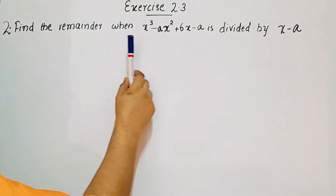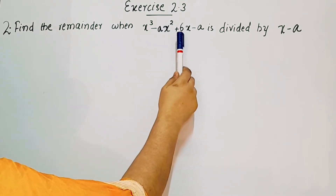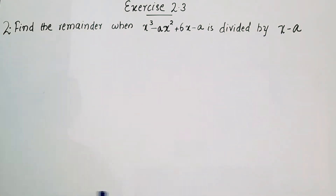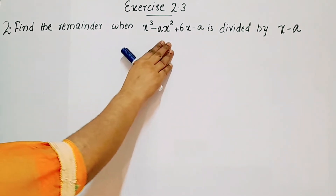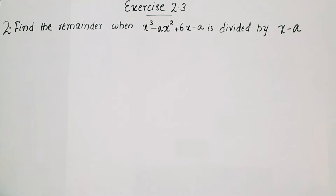Find the remainder when x³ minus ax² plus 6x minus a is divided by x minus a. This is a polynomial, and we will use the remainder theorem.